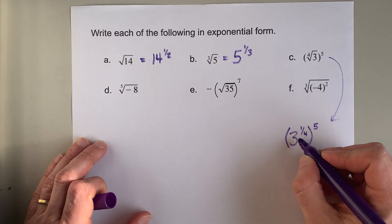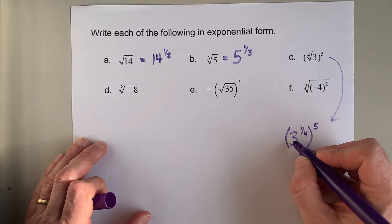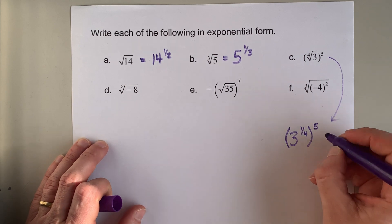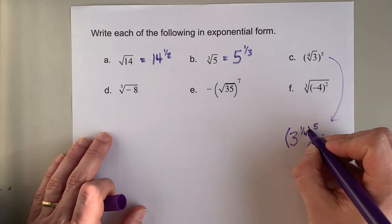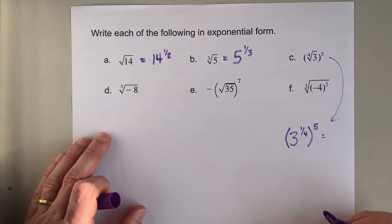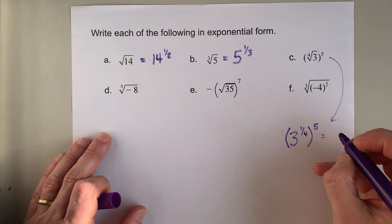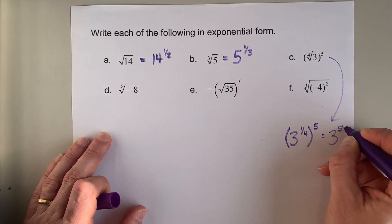Now, what can you do with two exponents when you have a number to a power raised to another power? That is equivalent to these two exponents multiplied by each other. Five times one quarter is five quarters.